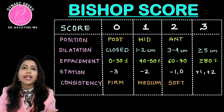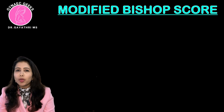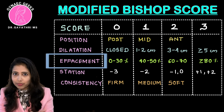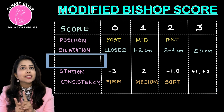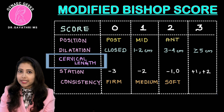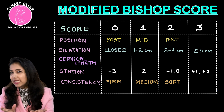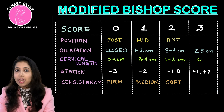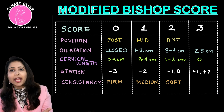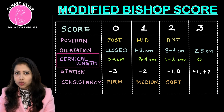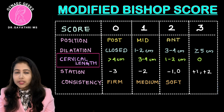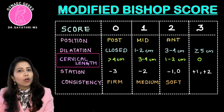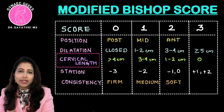In the modified Bishop's Score, everything is similar to the standard Bishop's Score except that effacement is replaced by cervical length. Cervical length is easy to remember as it is just the opposite of dilatation. So for cervical length: score 0 is more than 4 cm, score 1 is 3 to 4 cm, score 2 is 1 to 2 cm, and score 3 is 0 cm.